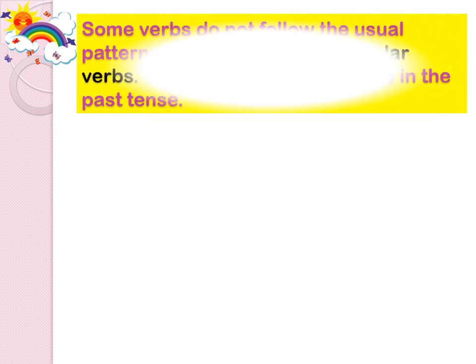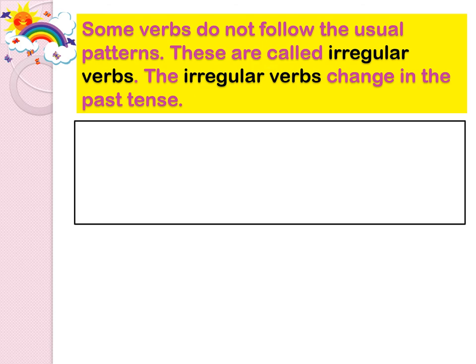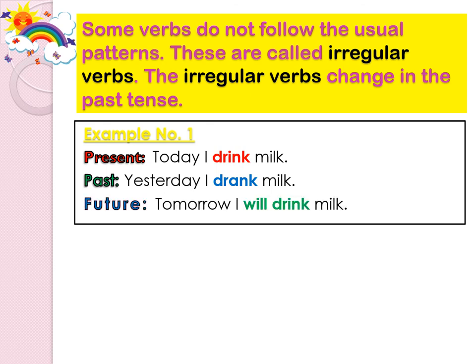Some verbs do not follow the usual patterns. These are called irregular verbs. The irregular verbs change in the past tense. Example number one. Present tense: Today I drink milk. Past tense: Yesterday I drank milk. Future tense: Tomorrow I will drink milk.